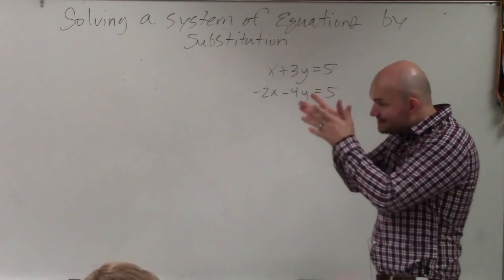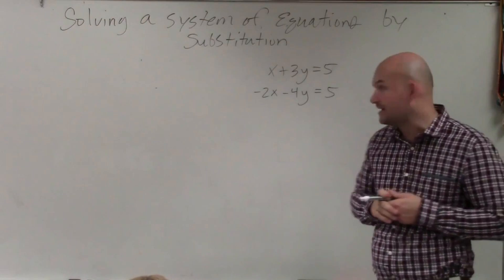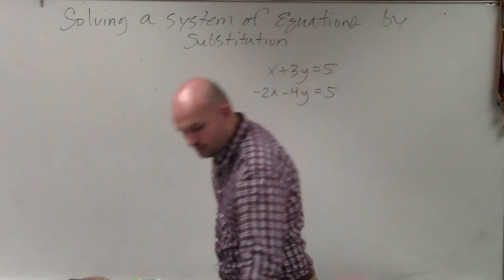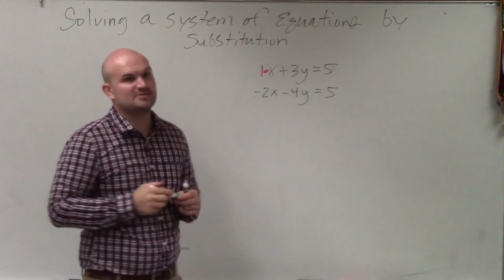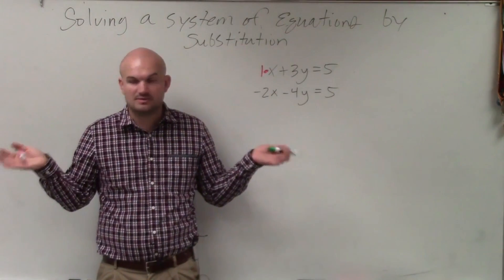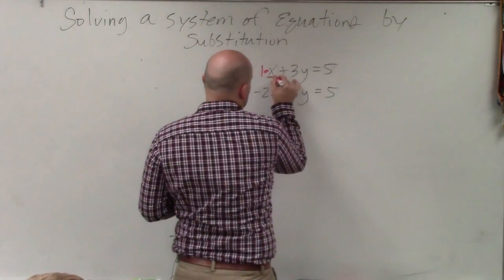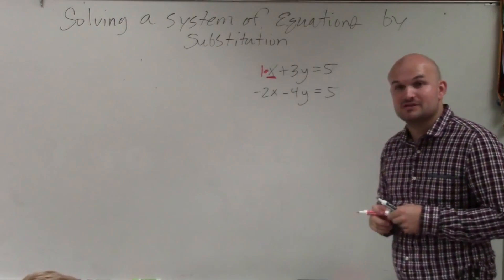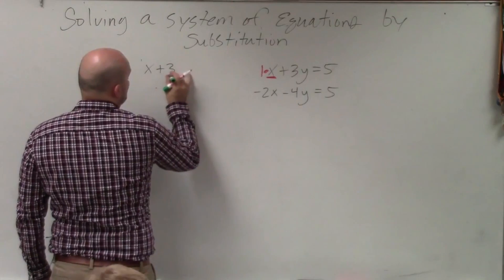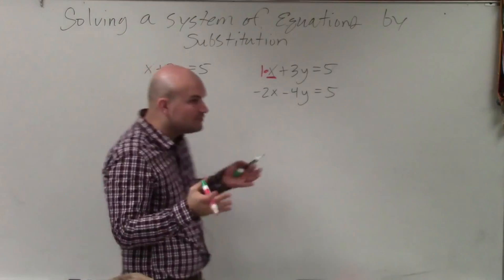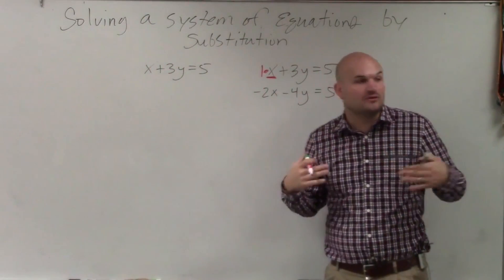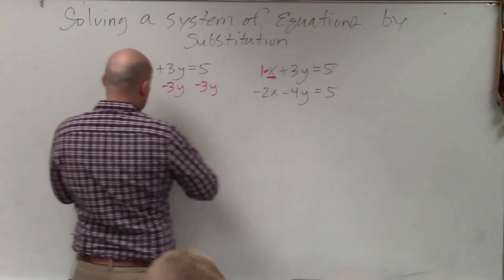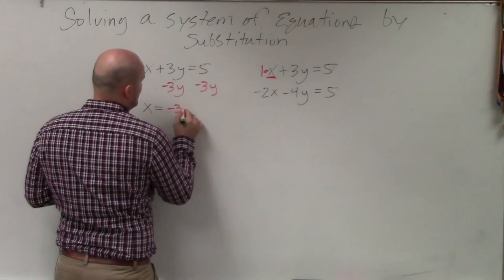Step one: identify a variable with a coefficient of 1 or negative 1. The coefficient is the value being multiplied by your variable — basically we're looking for a variable that is by itself, meaning it's being multiplied by 1. You can see that x is my variable with a coefficient of 1. Step two: solve for that variable using inverse operations. I always solve for the variable with a coefficient of 1 or negative 1 because all we have to do is subtract the 3y. So x equals negative 3y plus 5.